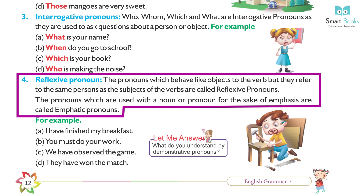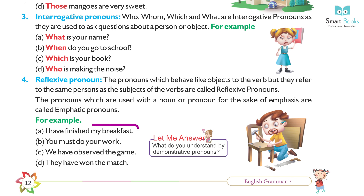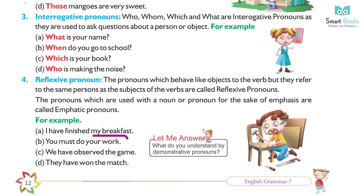Four: Reflexive pronouns. Pronouns which behave like an object to the verb but refer to the same person as the subject are called reflexive pronouns. Pronouns used with a noun or pronoun for emphasis are called emphatic pronouns. For example: (a) I have finished my breakfast. (b) You must do your work.